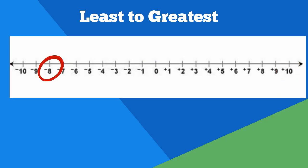And finally, negative 8, negative 2, negative 6. From least to greatest the integers would be negative 8, negative 6, negative 2.